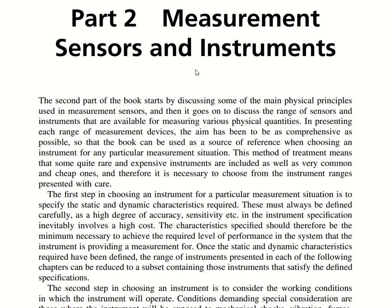The goal is that at the end of this coursework you should be capable enough to pick whatever sensor is suitable for a particular situation or circumstances. The first step in choosing an instrument for any measurement situation is to specify the static and dynamic characteristics required — such as accuracy, sensitivity, and precision. Higher precision and sensitivity means higher cost.